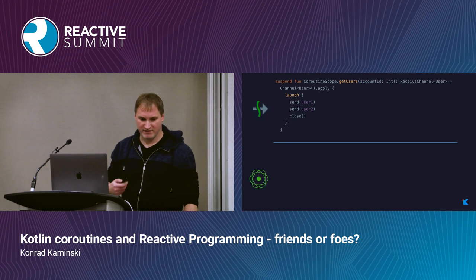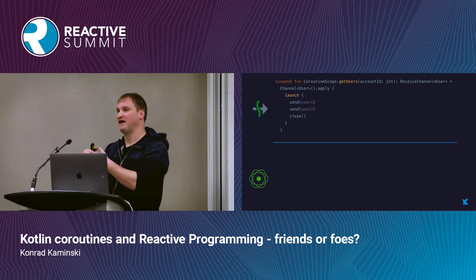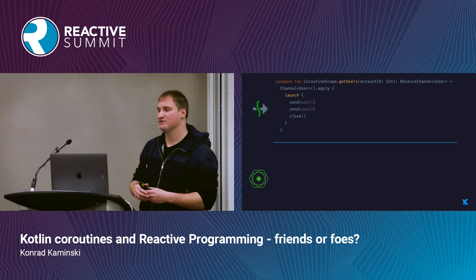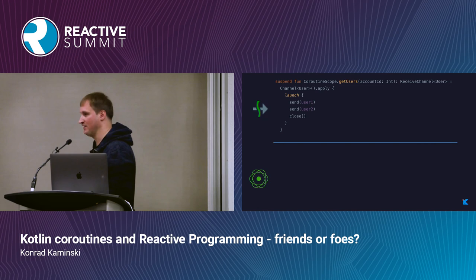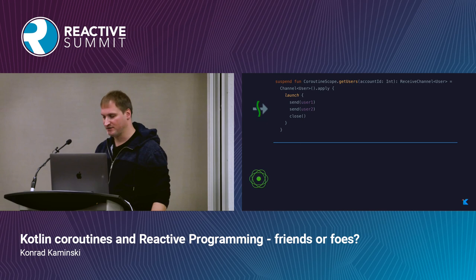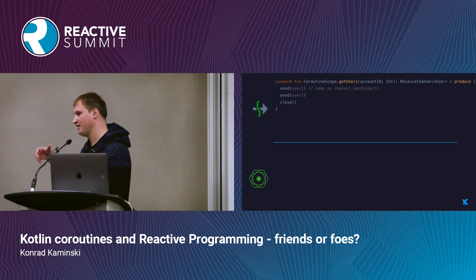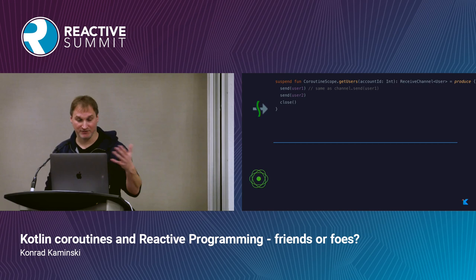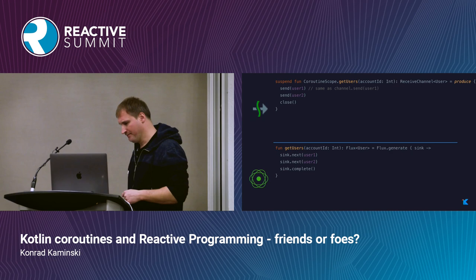To create streams with Kotlin coroutines, you create a channel using the channel function and then create a coroutine using launch to send values to it. This pattern is so common there's a special function called produce, which creates both the coroutine and the channel and returns the channel. You can use send and close directly. For Flux in Reactor, the simplest way is to use the generate function, where you're provided with a synchronous sink and can call next to deliver values and complete to signal the end.